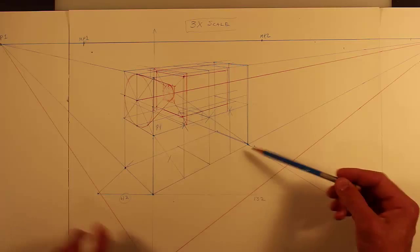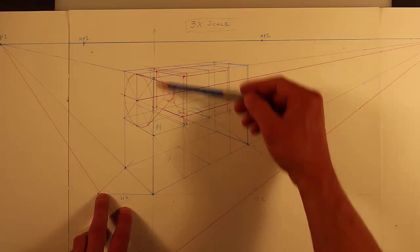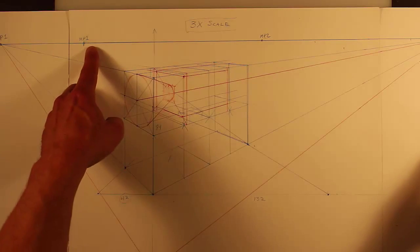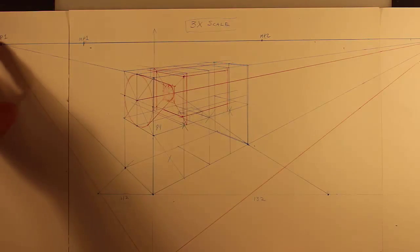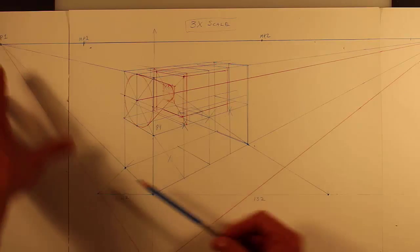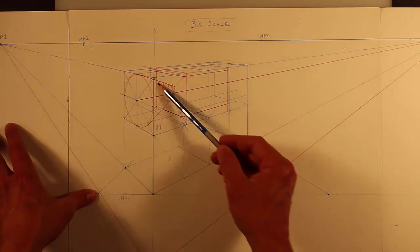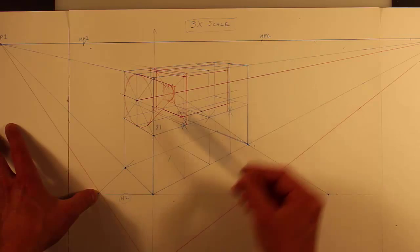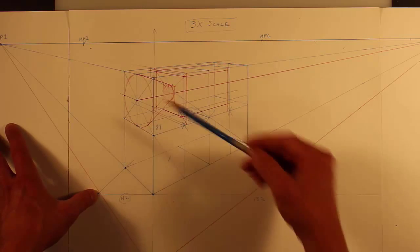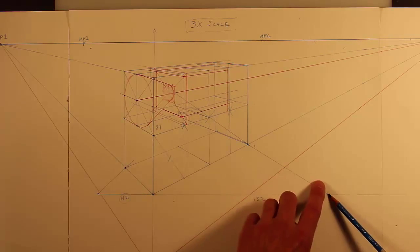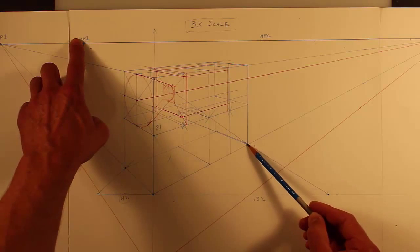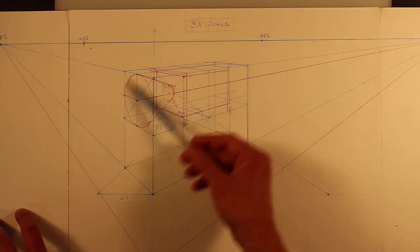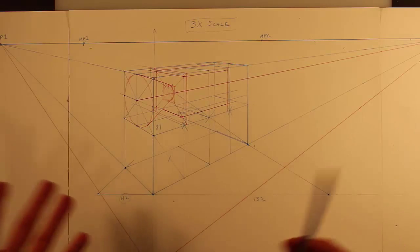Okay, and so then once you get this T-form here, then you find your station points, measuring points, this measurement is this, this measurement is this, and then convergence lines, and then where this intersects going to the measuring point, that's the first vertical there. Where this intersects going to that measure point, the convergence line is that vertical. Then what you have is the proportions in perspective.